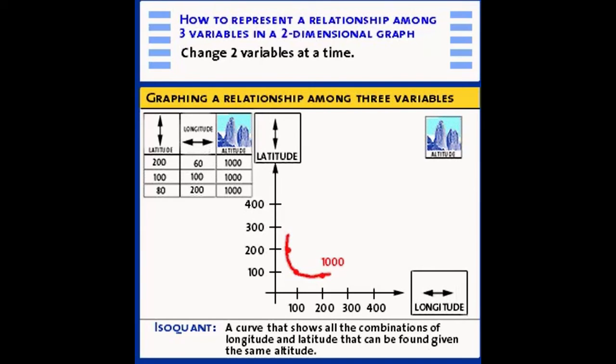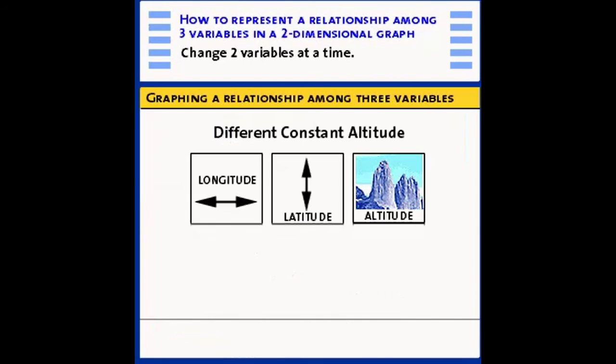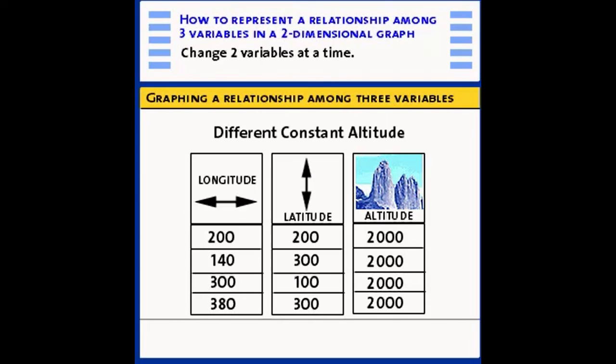Let's consider another set of information here. Suppose we look at this table of numbers. Here are combinations of latitude and longitude that have a constant altitude of 2,000. 200 north and 200 east gives us an altitude of 2,000. Same with 140 and 300 and so forth. Each set of combinations here of latitude and longitude gives us a constant altitude of 2,000. So now let's represent this set of points with a different isoquant in the same graph.